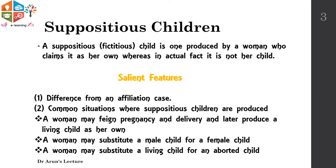First, a woman may feign pregnancy and delivery and later produce a living child as her own. Second, wherein a woman may substitute a male child for a female child, or otherwise a living child for an aborted child.